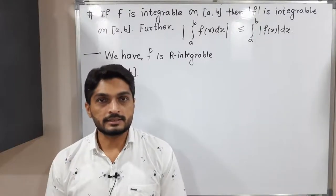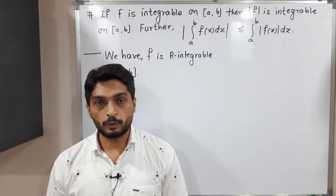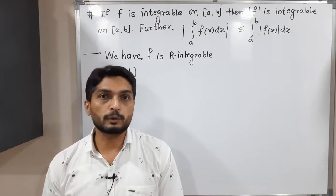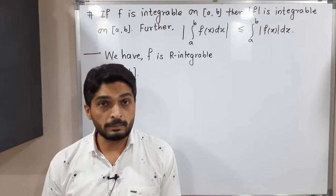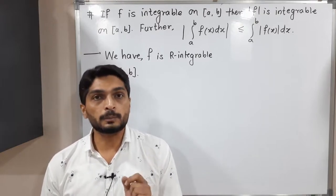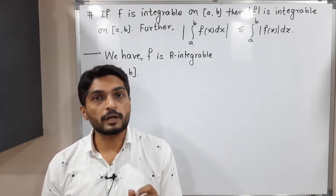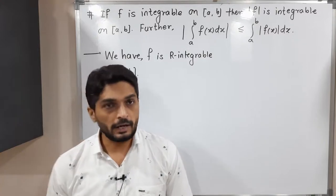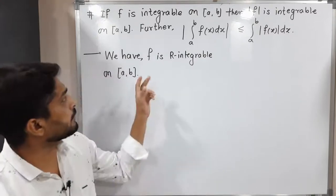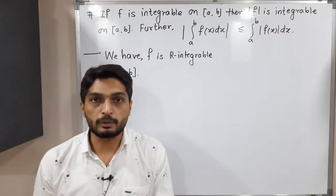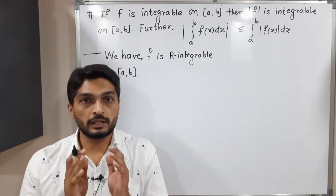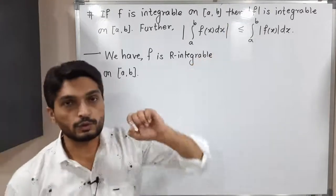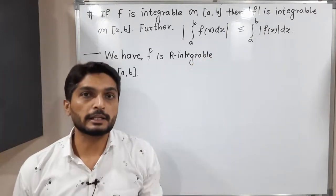Hi everyone, let us discuss this result. So what we have: function f is Riemann integrable on closed interval [a, b]. This is the given thing, and we have to prove that |f| is also Riemann integrable on closed interval [a, b]. I have written the given information here. Function is Riemann integrable on closed interval [a, b], and what we have to prove is that |f| is also Riemann integrable.